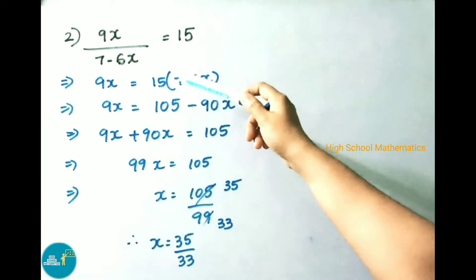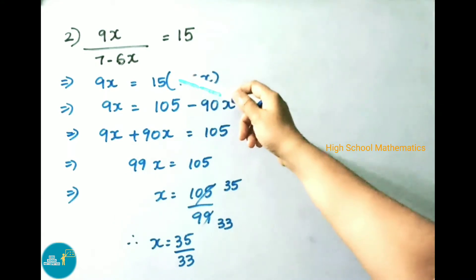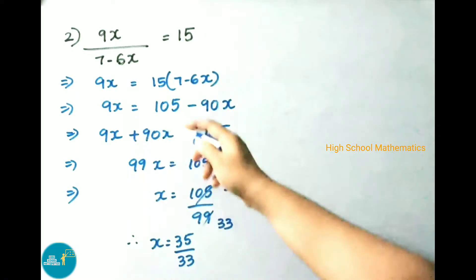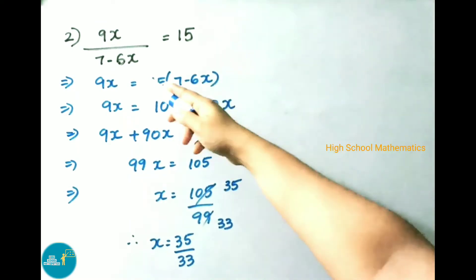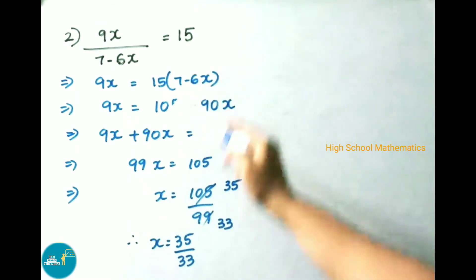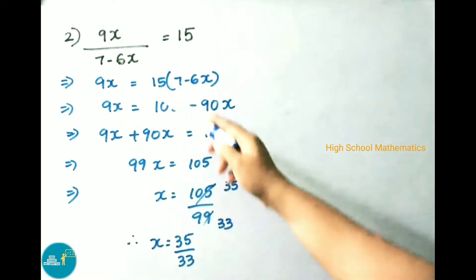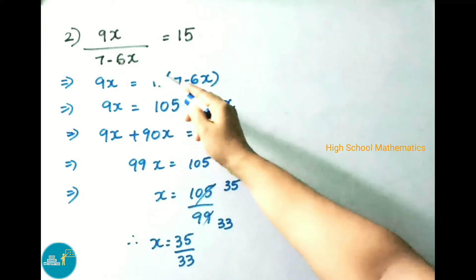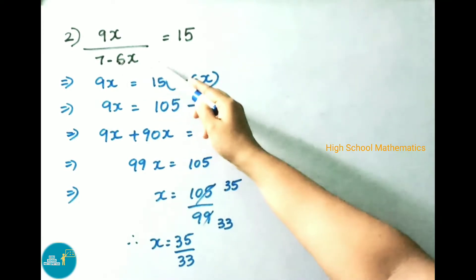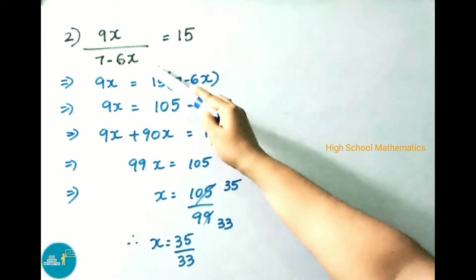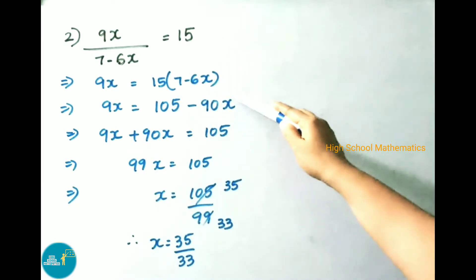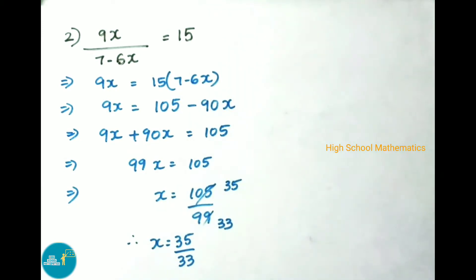9x / (7 - 6x) = 15. That implies 9x = 15 × (7 - 6x). Here the denominator part, that is 7 - 6x, is going to divide; on transposing it is going to multiply. So we have multiplied here.